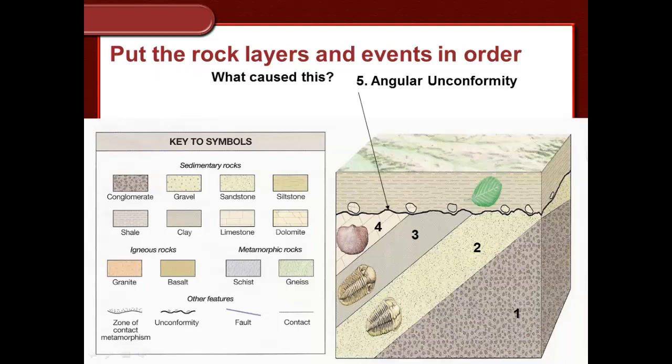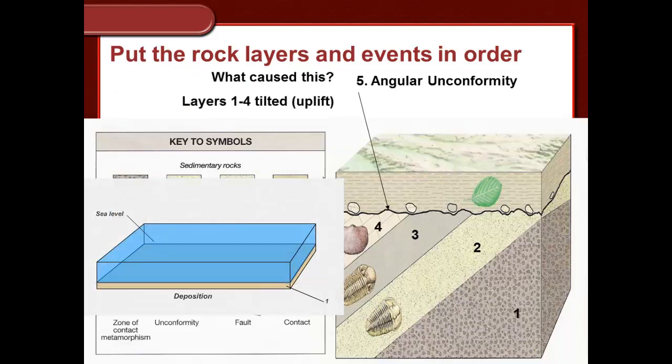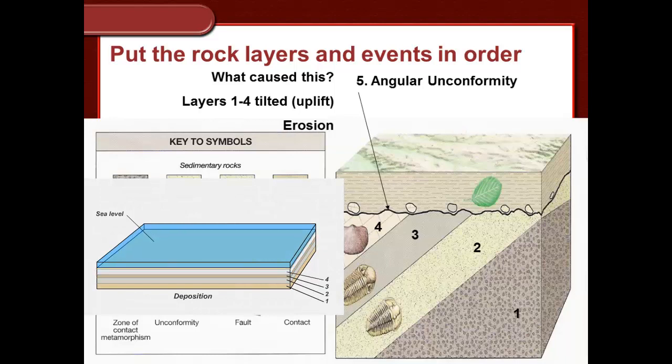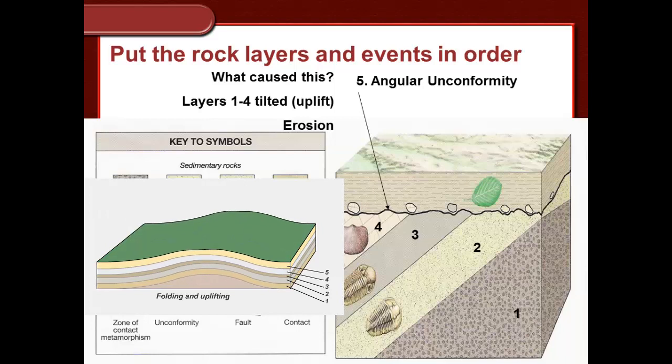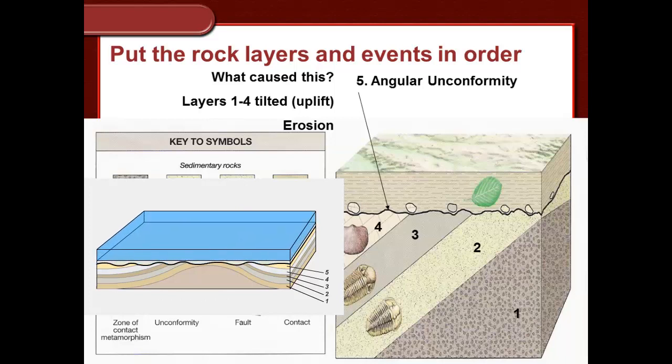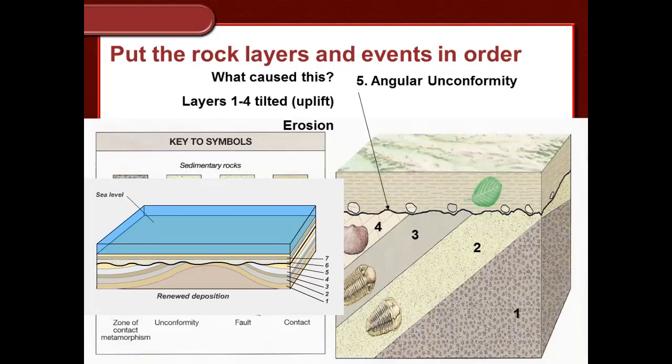This normally means that say two continents are coming together - the land that's in between gets squished and pushed up. That's how mountains get formed - the mountain building process. The land that's in between the continents is raised above the ground. This is the uplift - it's been lifted above. There's more wind and water and glaciers that are going to erode it.